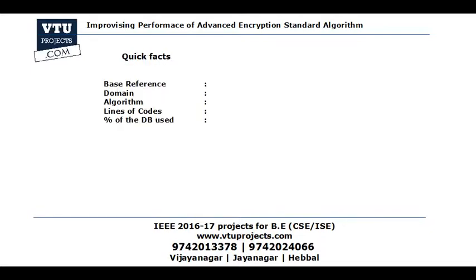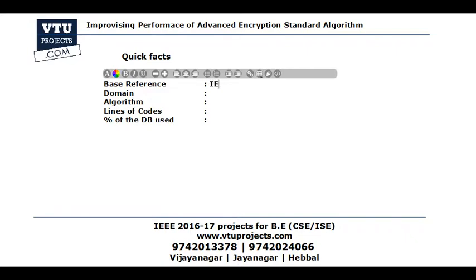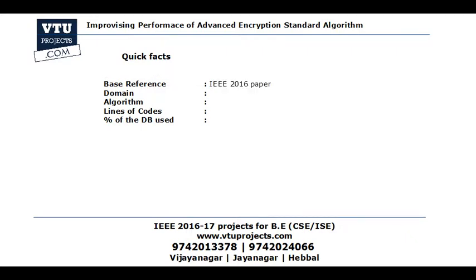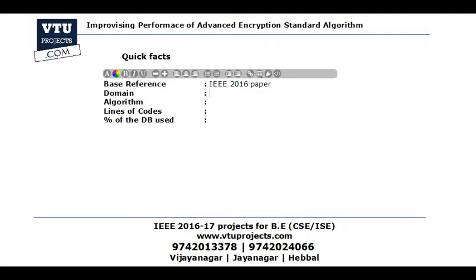Coming to the quick facts — here are a few points you need to know about this project, because at any point of time your internals, externals, or anyone concerned about your project might ask you. The base reference indicates where we got the idea from. For this particular project, the base reference is an IEEE 2016 paper — the latest paper. So we are implementing it, which will be an added advantage. The domain of this project comes under the security domain, dealing with cryptographic systems.